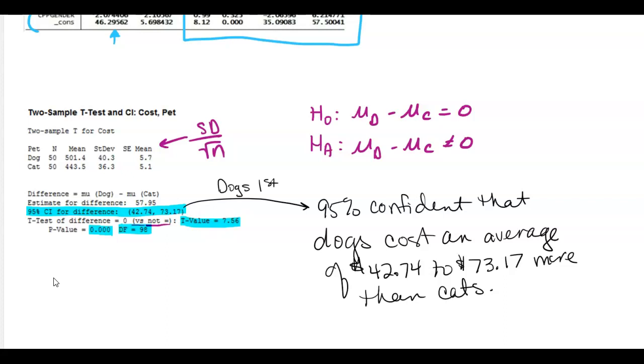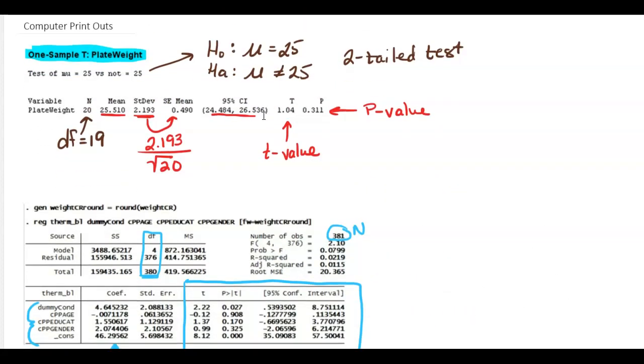So when you have a computer printout, the things that you want to be able to find is you want to be able to find the p value. So let's make a list. Need to find, you need to be able to find the degrees of freedom. We should probably do a lower case like it says. So degrees of freedom. You need to be able to find a p value.